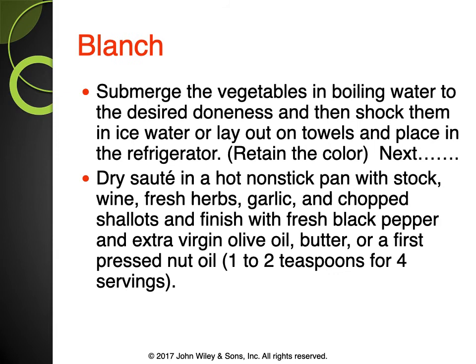Dry sautéing is an option but I personally always have a little bit of oil in there or I'll probably burn whatever I'm cooking. For blanching: you typically do this if you want a bright color for your vegetables. You submerge the vegetables in boiling water until desired doneness, then shock them in an ice water bath to stop the cooking and retain the color.